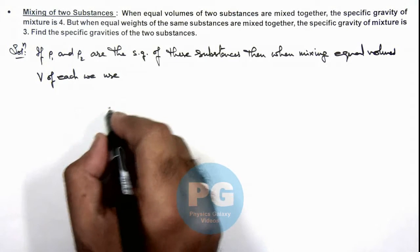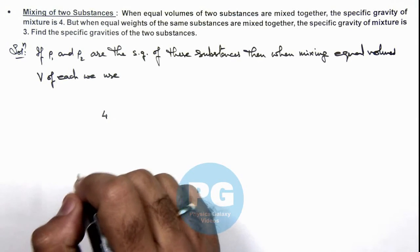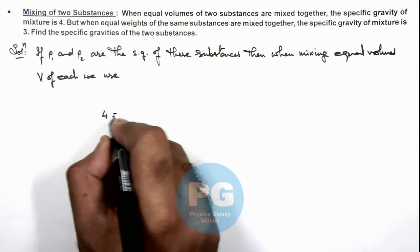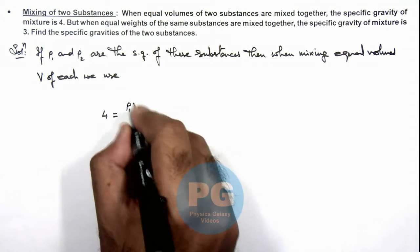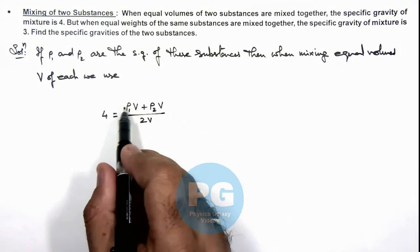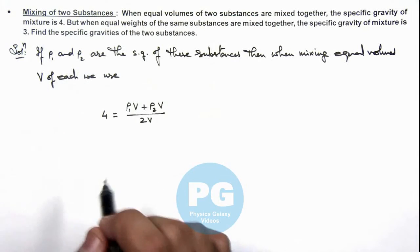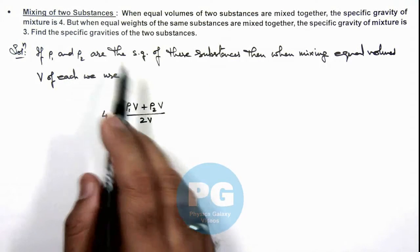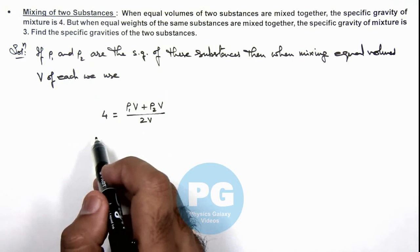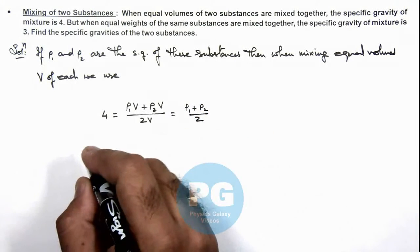So we can write 4 equals the specific gravity when equal volumes are mixed. If m1 and m2 are the masses, 4 equals (ρ1·V + ρ2·V) divided by 2V, because ρ1 and ρ2 are the specific gravities of individual substances, so the mass of the first is ρ1·V and for the other ρ2·V, divided by the total volume. Simplifying this gives us (ρ1 + ρ2) / 2 = 4, that is Equation 1.